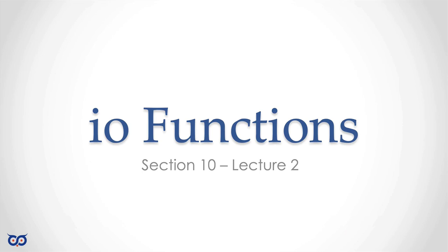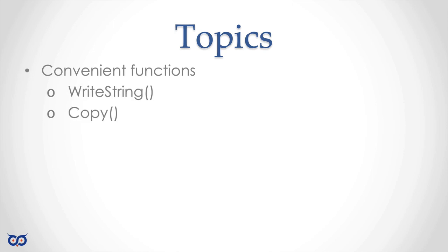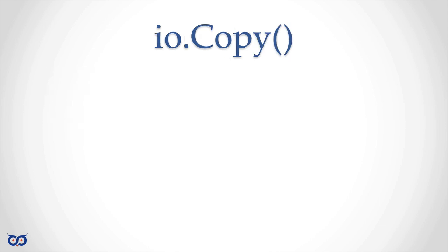Welcome to Lecture 2 in Section 10. In this lecture, we're going to be looking at a few functions from the IO package. Keep in mind that we're not going to be covering all the functions, and these are not even the most important functions — just a few I want to point out. The functions we want to look at are what's called convenient functions. The first one is writeString, the next one is the copy function, and the last function is the pipe function.